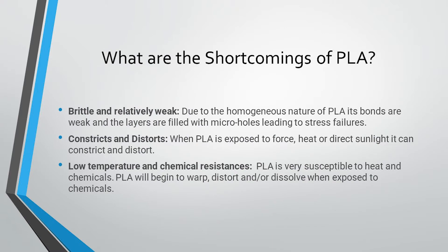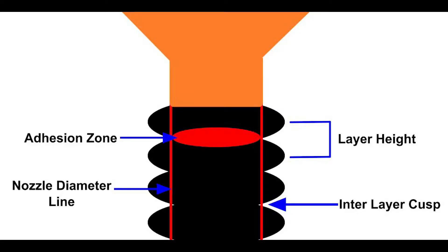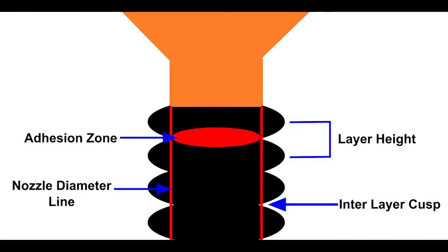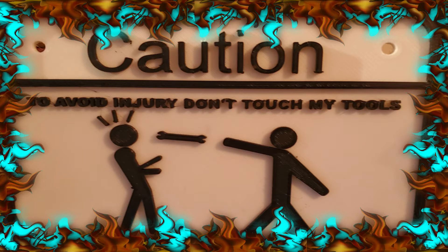Now let's talk about some of the shortcomings of PLA. Due to the homogenous nature of PLA, its bonds are weak and the layer lines are filled with micro holes leading to stress fractures, making the material relatively weak and brittle. In addition to the brittleness, when PLA is exposed to force, heat, or direct sunlight, it can constrict, distort, or just straight up fracture. The final shortcoming is that it has low temperature and chemical resistance — PLA is extremely susceptible to heat and chemicals and will begin to warp, distort, or dissolve when exposed.